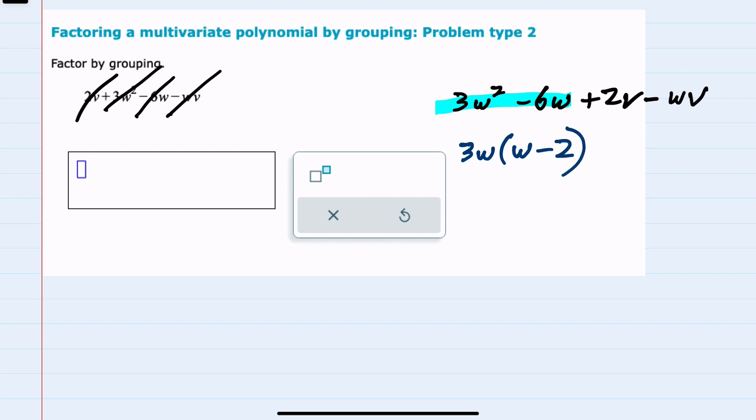And then for the second grouping, I can see that they both have a v. And so when I factor out a v, I would be left with a 2 in the first term, and factoring out a v would leave me with just the w in the second term.